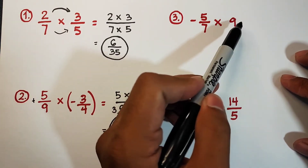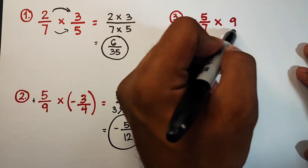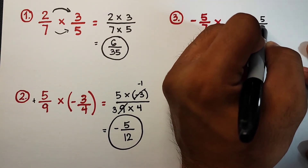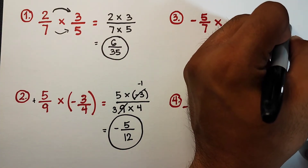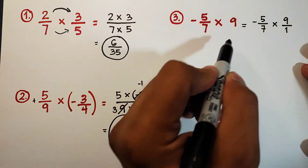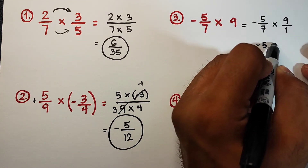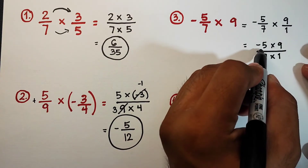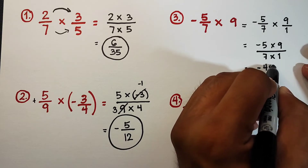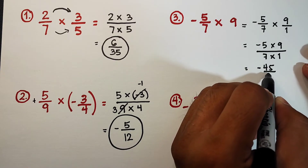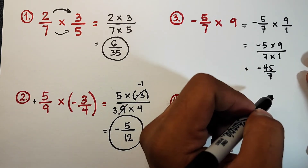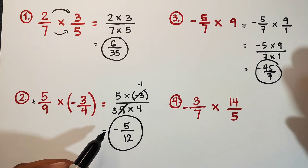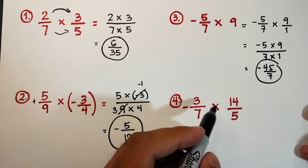Now let's continue with item number three. We are given negative five over seven times nine, where nine is a whole number. We can rewrite nine in fractional form as nine over one. So we multiply: negative five times nine over seven times one. Negative five times nine is negative forty-five over seven. So the final answer for number three is negative forty-five over seven.